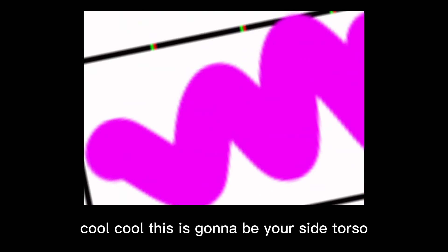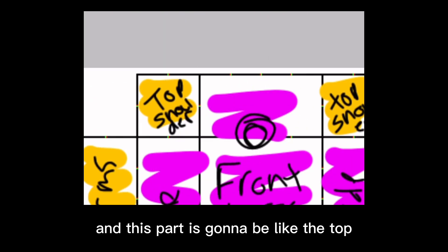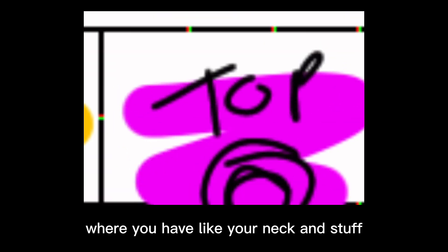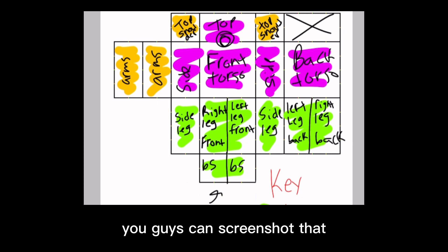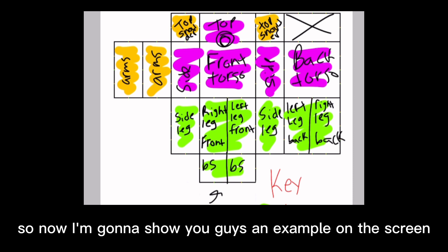This part here is going to be like your neck hole. This is going to be your front torso. This is going to be your side torso, as well as this part right here. This part is going to be like the top where you have like your neck and stuff, and it's going to be the back torso. You guys can screenshot that or I can just post an image in my Discord server.